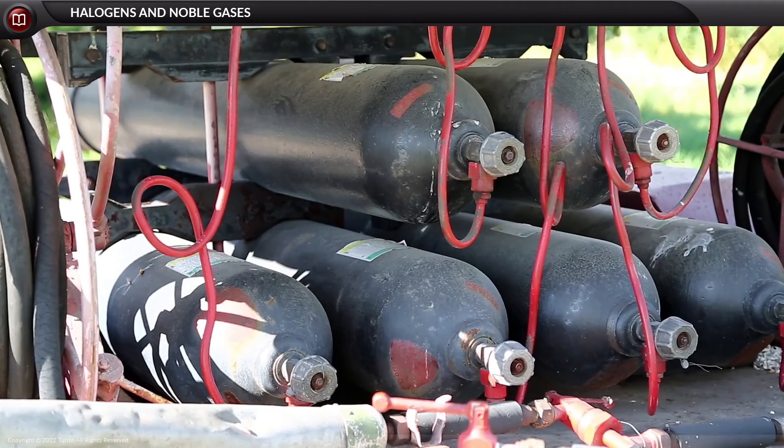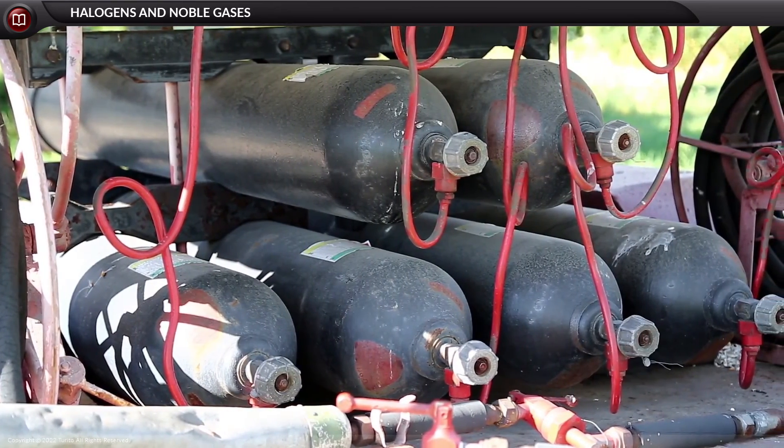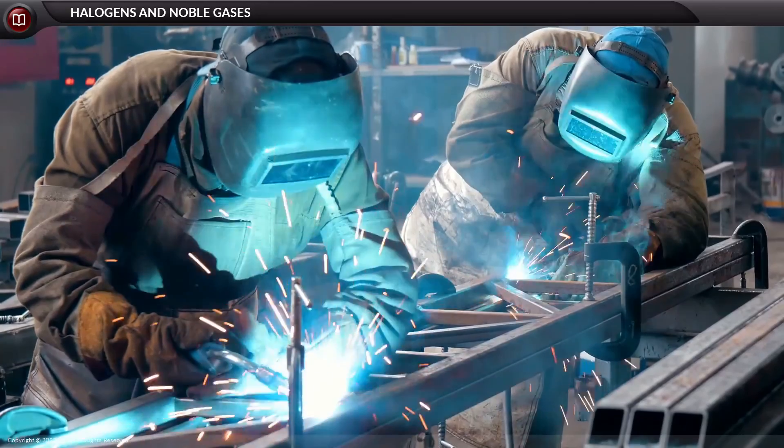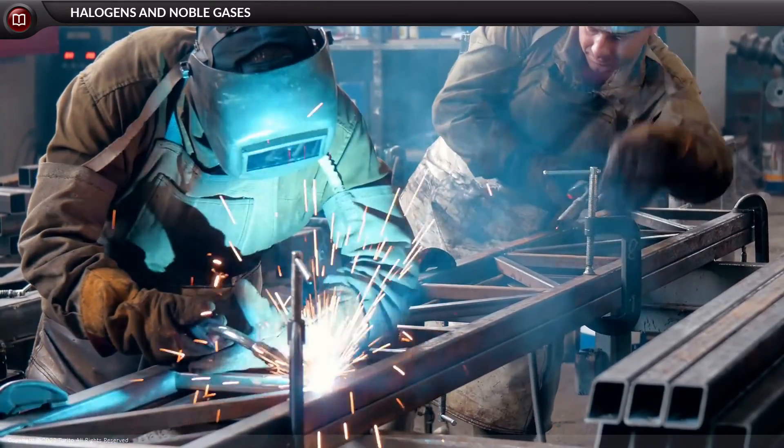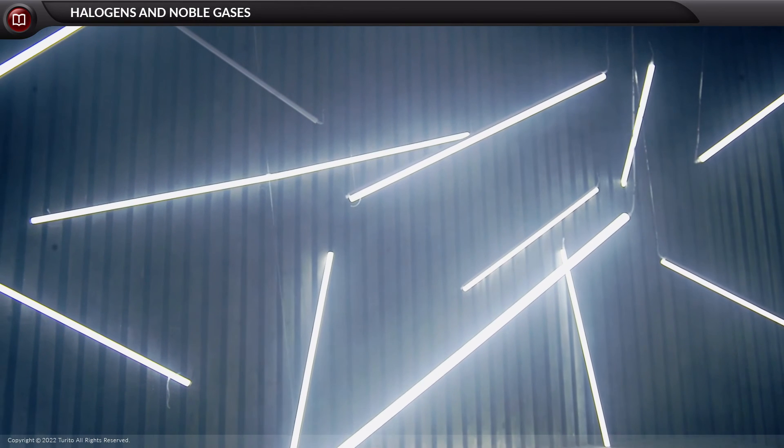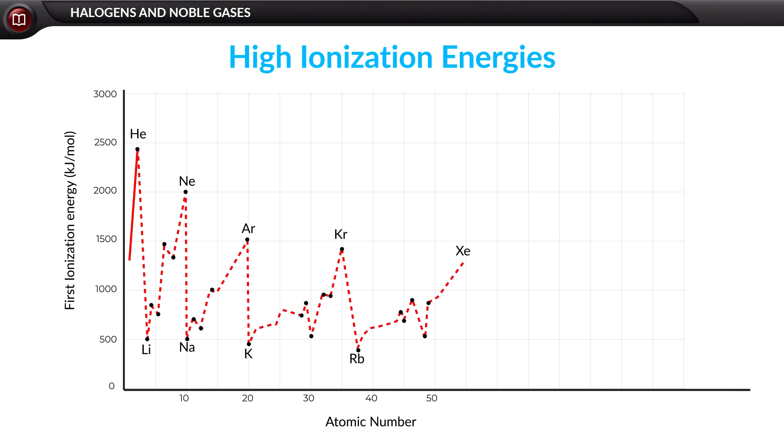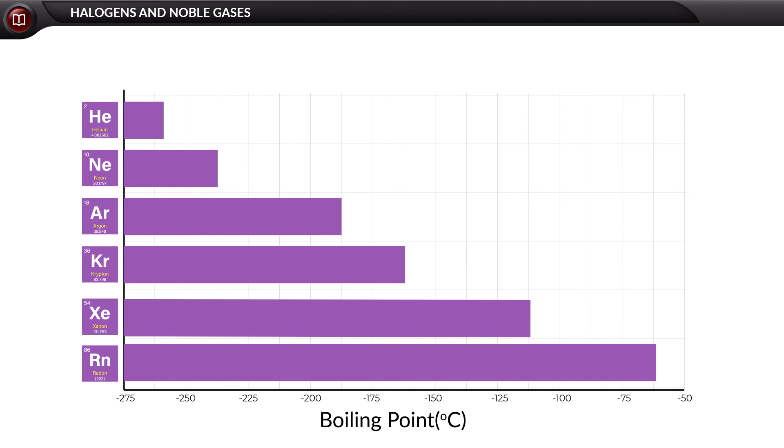Argon was the first noble gas to get discovered. Since they are unreactive, they are used in operations such as cutting and welding. At low pressure, noble gases conduct electricity and fluoresce. All these elements have very high ionization energies. They also have low boiling points. All are monatomic gases at room temperature.